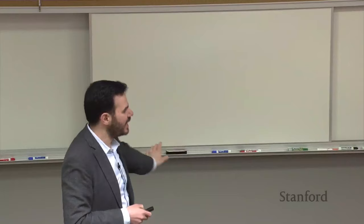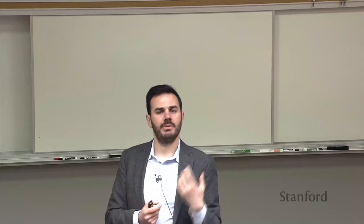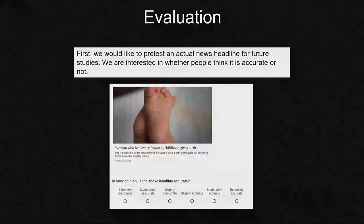We've run a lot of survey experiments testing this proposal. We've looked at many ways of directing people's attention to accuracy at the beginning of the study. The thing we've done most is an 'evaluation prompt' where at the beginning we say we want to pre-test a news headline — we show them one non-political headline and just ask, 'In your opinion, how accurate is this headline?' Then they go on to the main task where we show them a bunch of posts and ask how likely they'd be to share each.